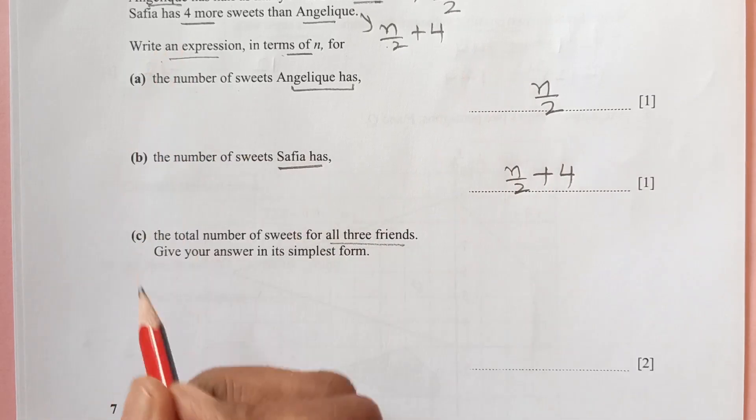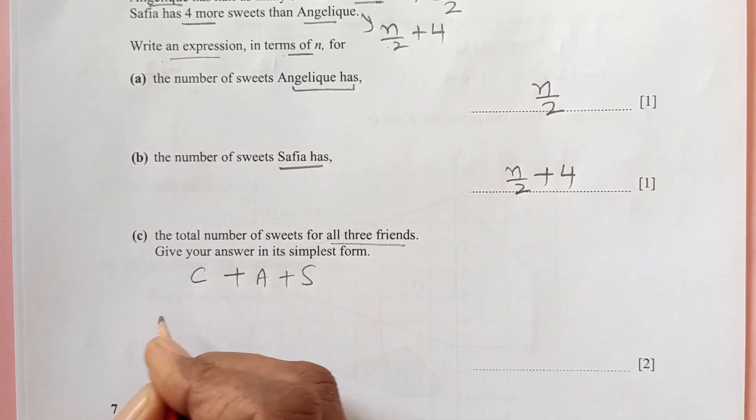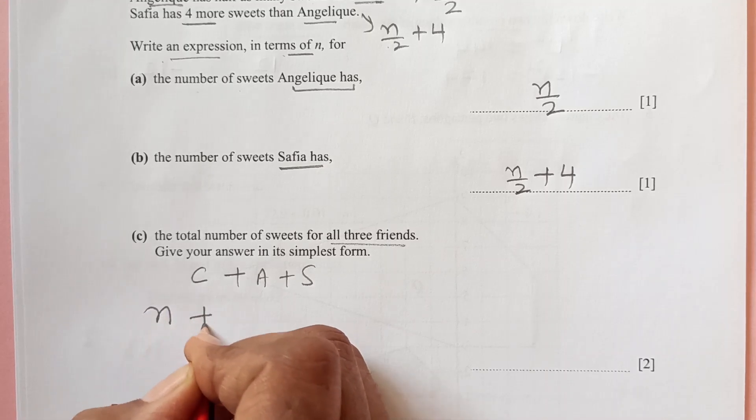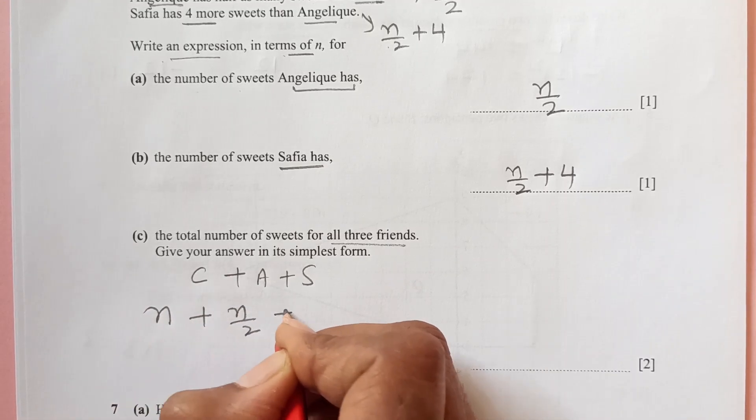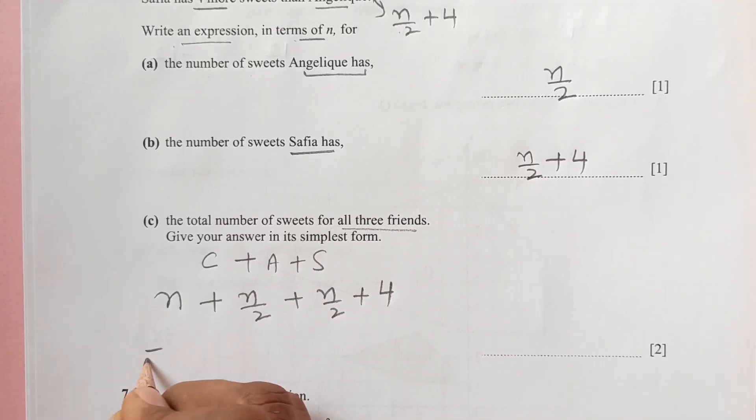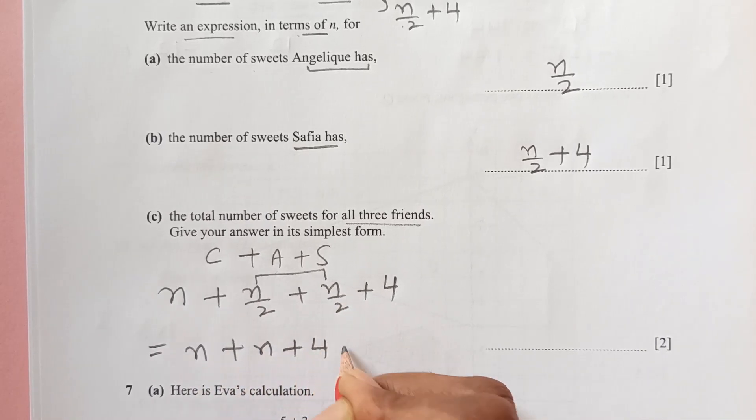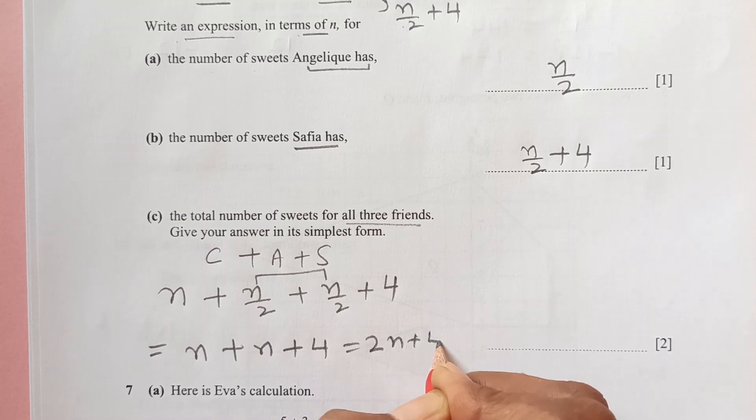The total number of sweets for all these friends: we are going to add Carlos, Angelic, and Sophia's sweets. Carlos has n, Angelic has n over 2, and Safia has n over 2 plus 4. So n plus n over 2 plus n over 2 is 2n plus 4, that is the final expression.